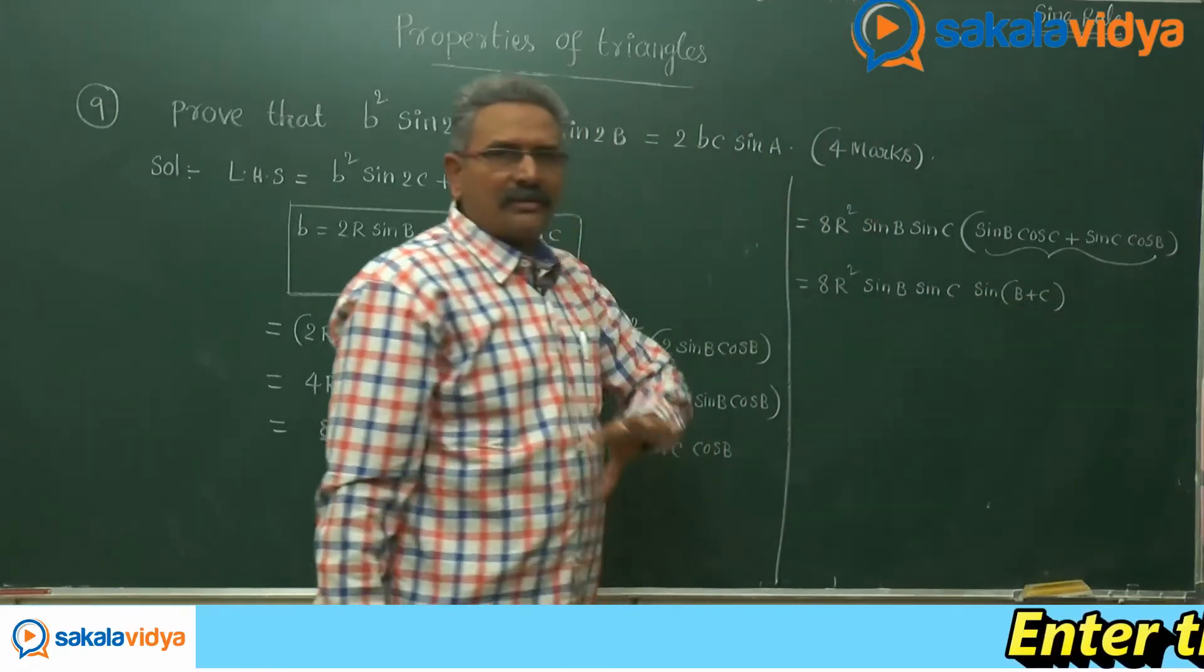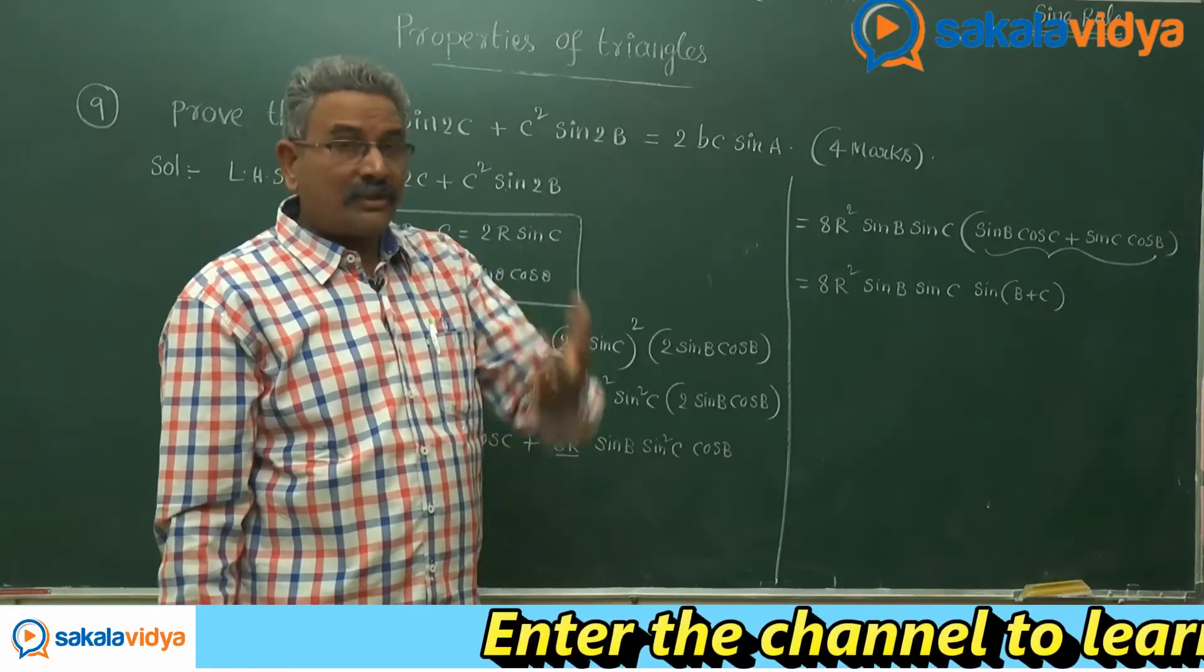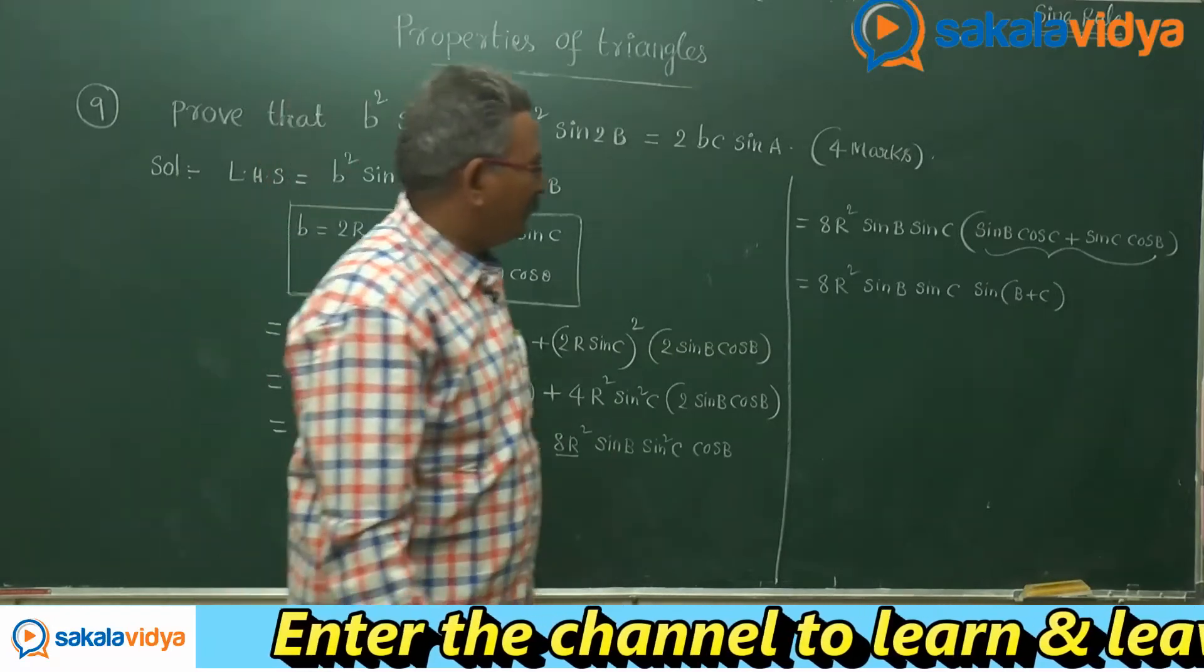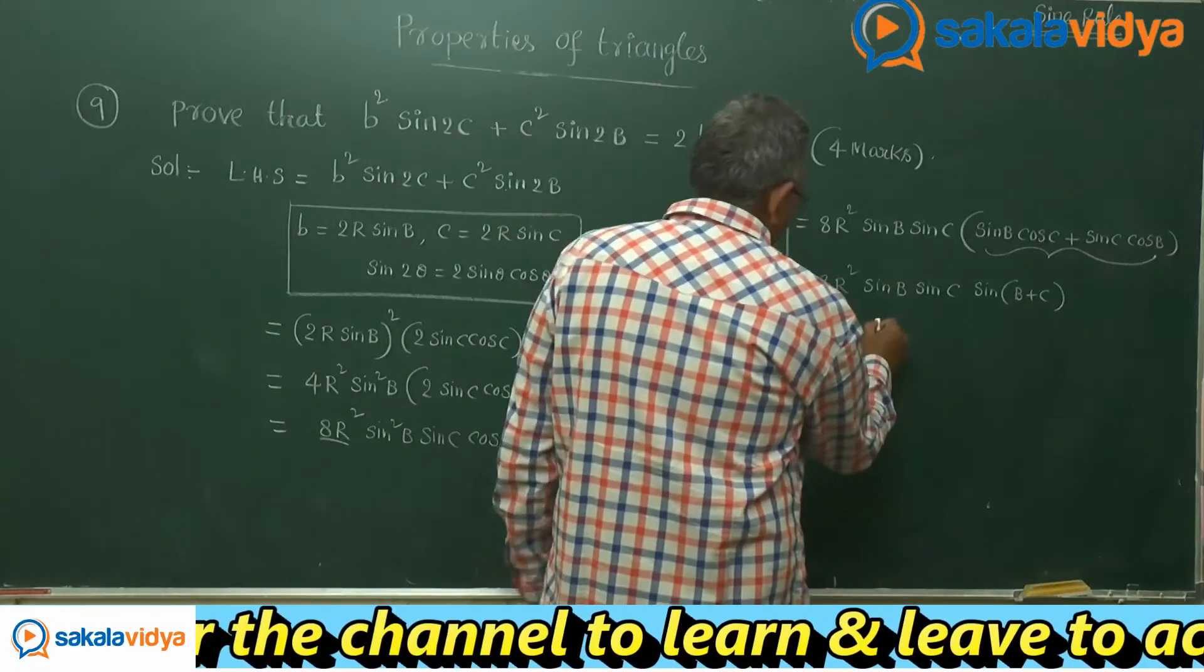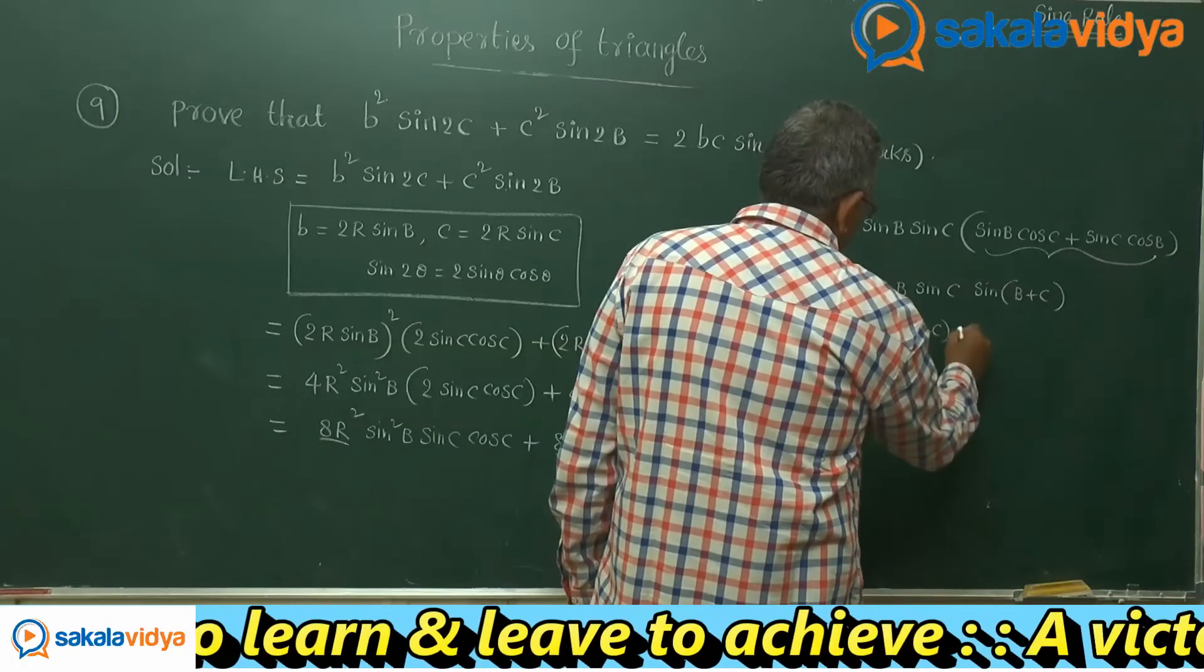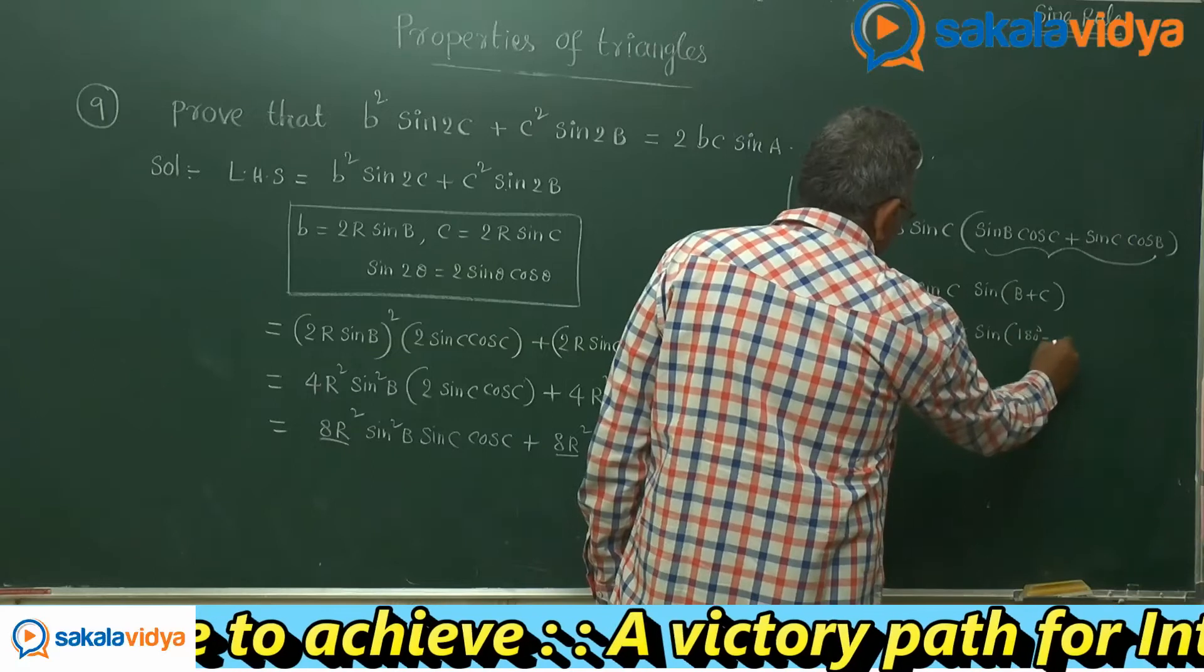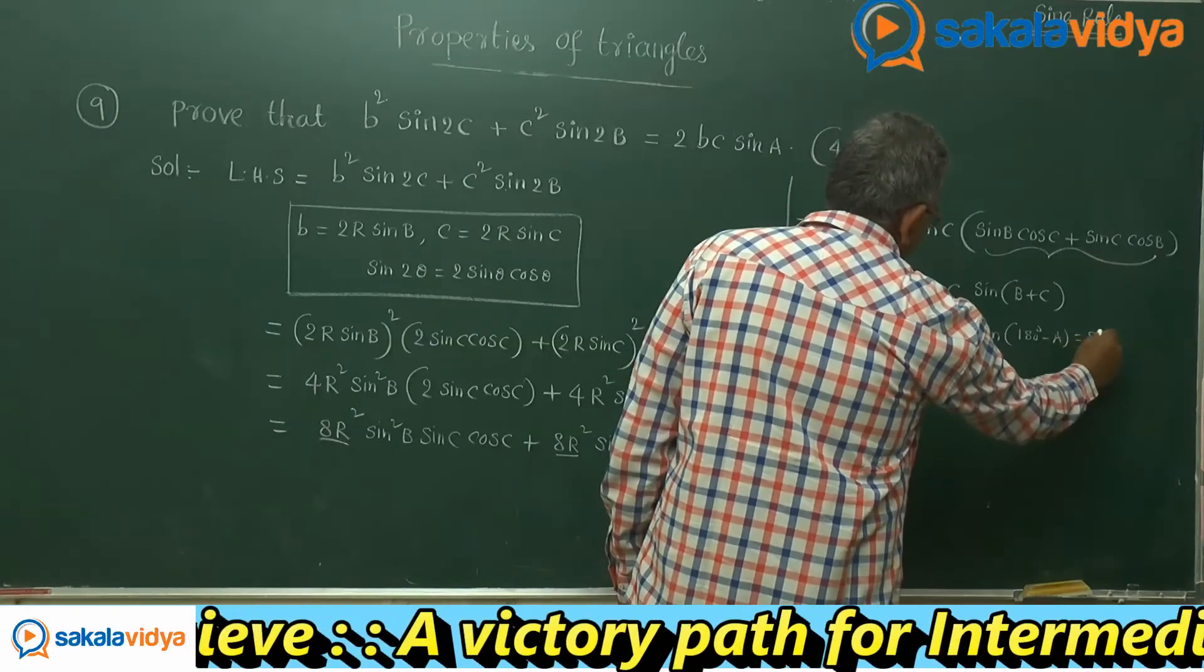In the triangle we know that a plus b plus c is equal to 180. We can find out sin of b plus c value. Here, sin of b plus c is equal to sin 180 degrees minus a. That is nothing but sin a.